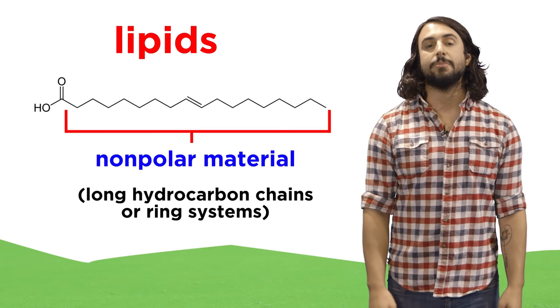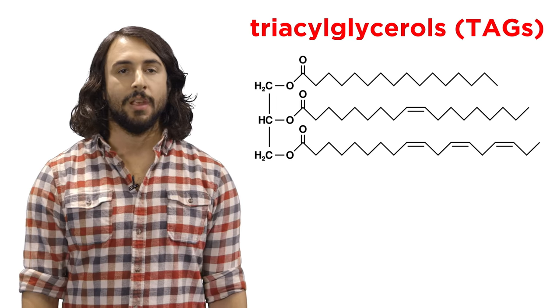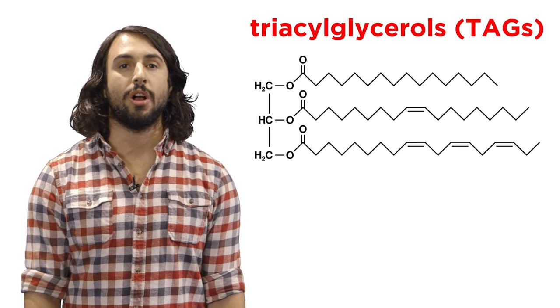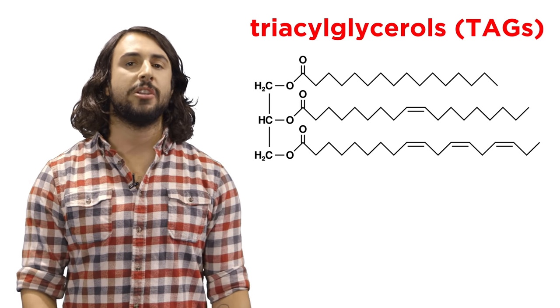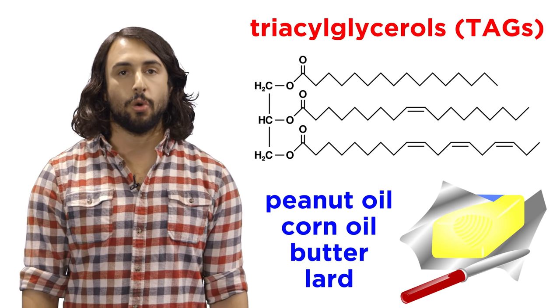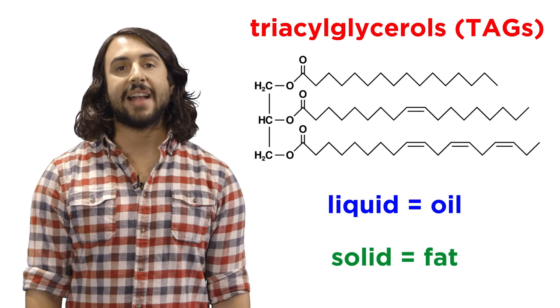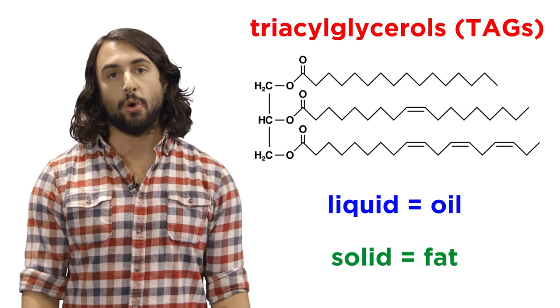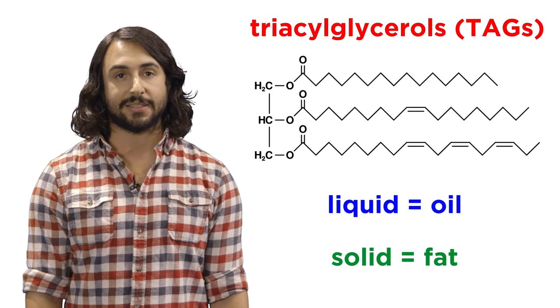Let's take a look at some different types of lipids. First, triacylglycerols or TAGs. These are molecules with three ester groups, and examples include peanut oil, corn oil, butter, and lard. TAGs that are liquid at room temperature are called oils, and if they're solid they're called fats.